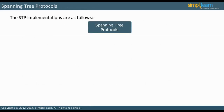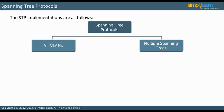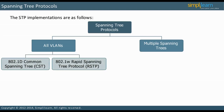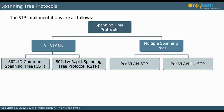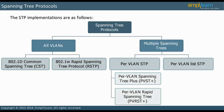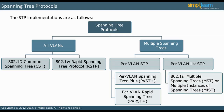The STP implementations can be categorized into all VLANs and multiple spanning trees. The two STPs that create one instance of spanning tree are common spanning tree and rapid spanning tree. Multiple spanning tree can further be divided into per-VLAN STP and per-VLAN list STP. Both the per-VLAN STPs are Cisco proprietary — these are PVST+, also called PVST, and PVRST+. Spanning trees are created for a group of VLANs in MST. In the next slide, let us discuss the original PVST, PVST+, and PVRST+.